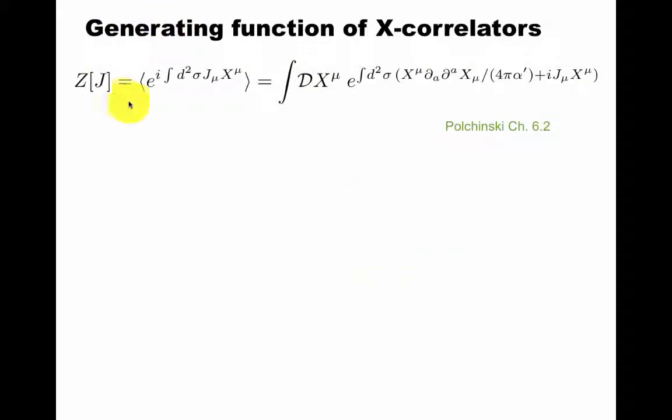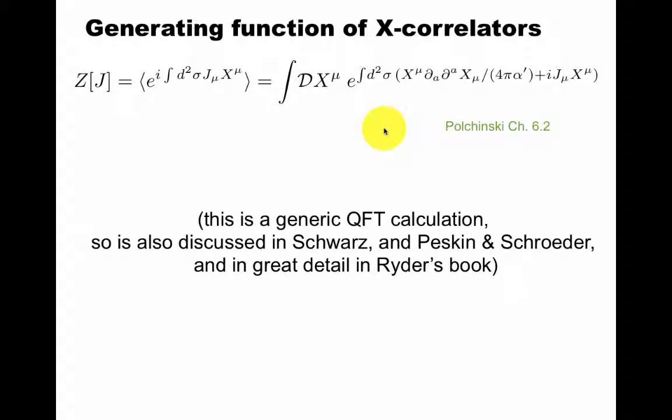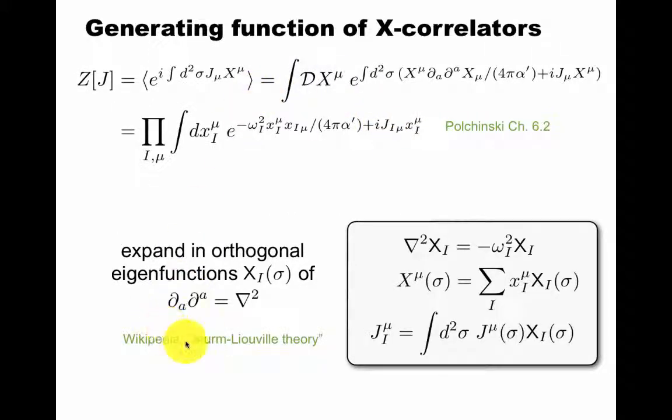But back to two dimensions, we want to compute a generating function of correlators. We want to compute an expectation value of products or functions of x's, where x's are a quantum field. To do so, we insert sources j, and we compute this generalized expectation value, which will then be our generating function z of j. So differentiating this z of j, we get correlators. Explicitly, this is the functional integral over the free action, which I've slightly rearranged here. So I get a minus sign, I put the normalization here. And this is done in Polchinski chapter 6.2, so it comes a little later. I emphasize that this is a generic calculation in quantum field theory. It's also discussed in a lot of the textbooks, and I recommend Srednicki's textbook quantum field theory.